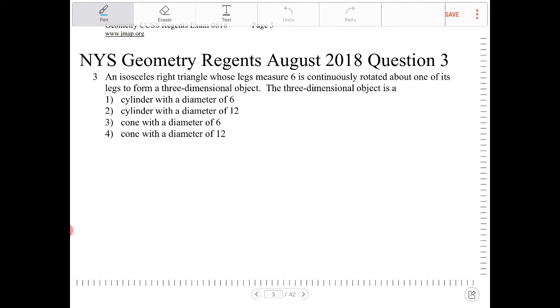So I'm going to draw an isosceles right triangle whose one of the legs is six. So if I rotate this about one of its legs, let's say this one right here, what I will get is a shape that looks like this and I'm going to use a different color.